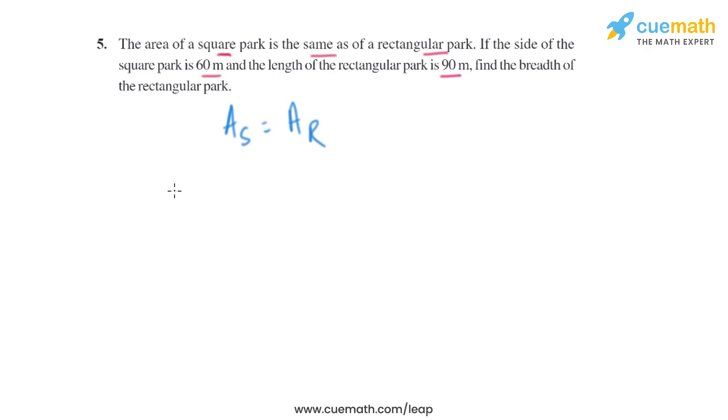We know that the side of the square park is 60 meters, so a equals 60 meters. To find the area of a square park, it's basically a squared, or side squared, that will be 60 squared, which is 3600 square meters.